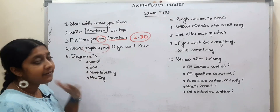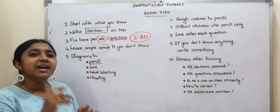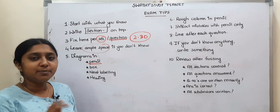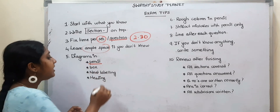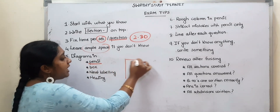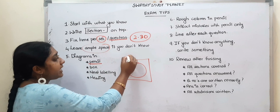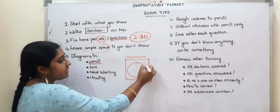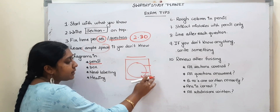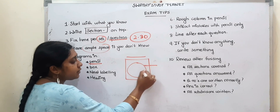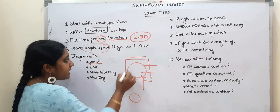The next tip is about diagrams. Diagrams are always made in pencil. You can use a pencil for the diagram. When you draw a diagram, use a box around it, write a heading, and label each part. If you label properly, you can get full marks for the diagram.